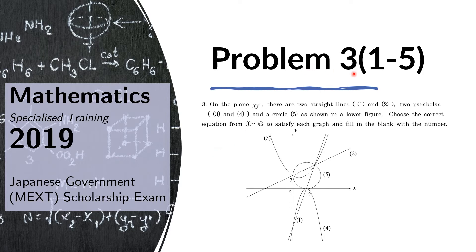Problem 3. On the plane XY, there are two straight lines 1 and 2, two parabolas 3 and 4, and a circle 5 as shown in the figure. Choose the correct equation from 1 to 15 to satisfy each graph and fill in the blanks with the number.